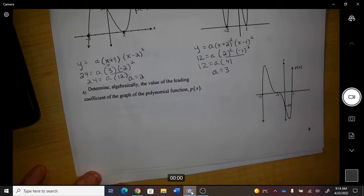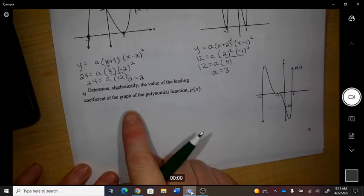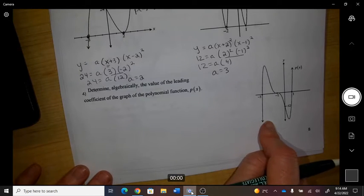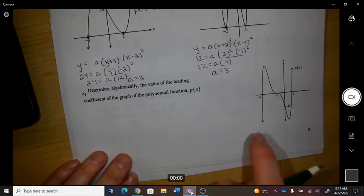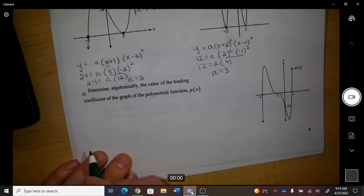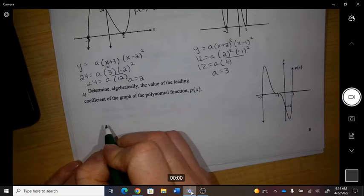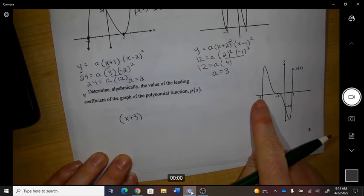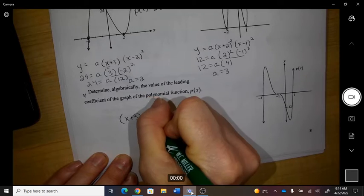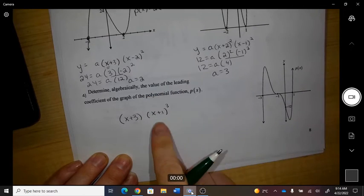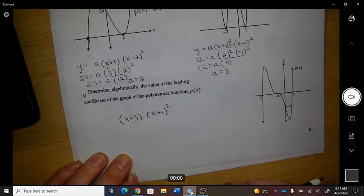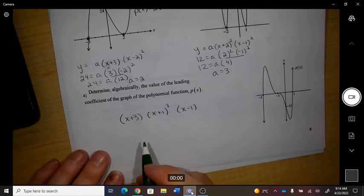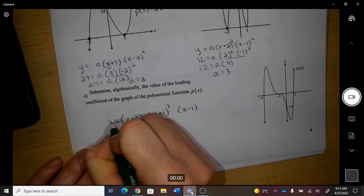Number 4, determine the value of the leading coefficient on this graph. So we don't need the actual equation, just the coefficient. So this is a fifth degree, the coefficient will be positive, so I need a factor x plus 3, I need a flatten on the factor x plus 1, so cubed, and I need to go through 1, so x minus 1. So that's my fifth degree, I need some kind of a value in the front.